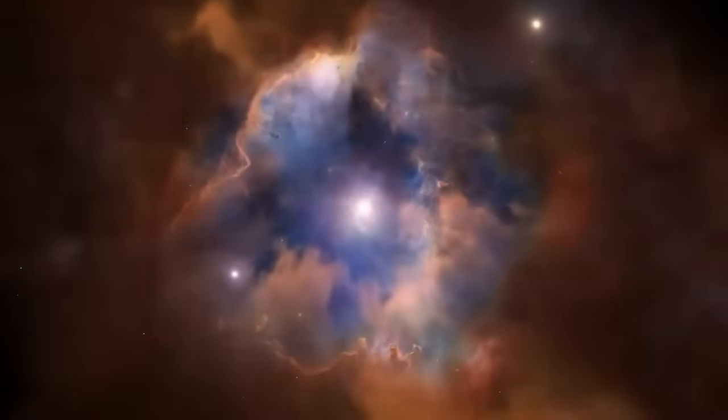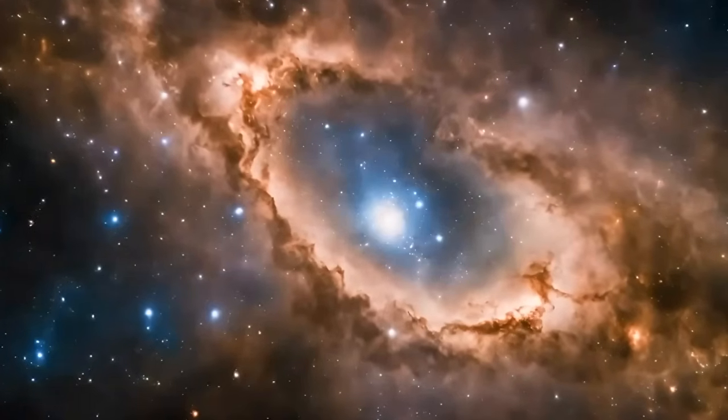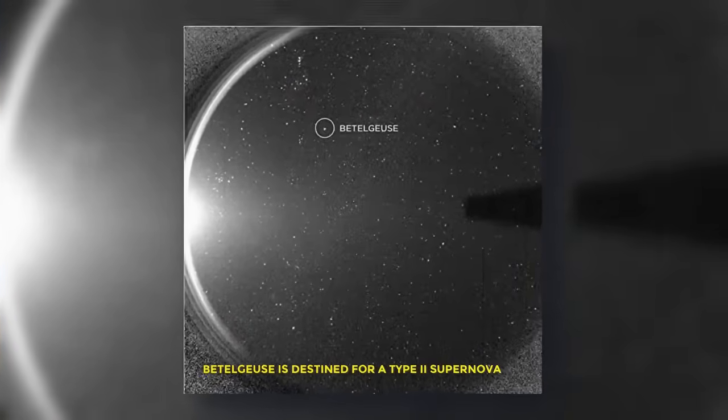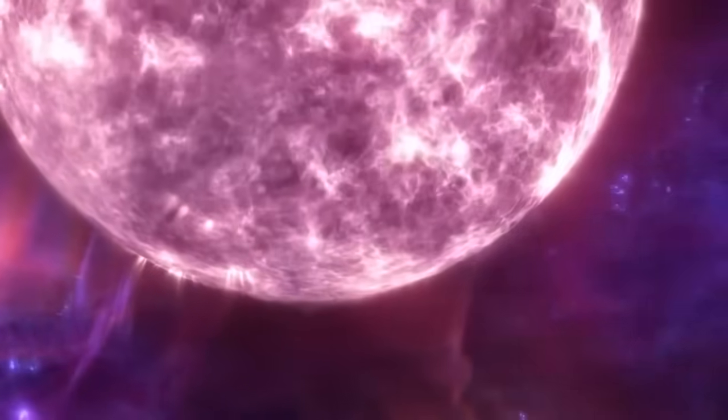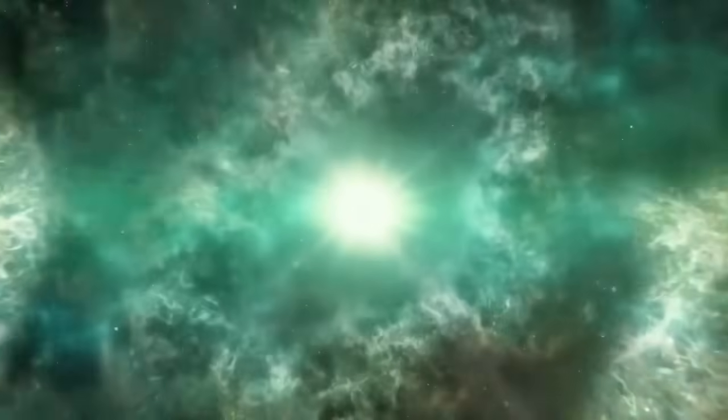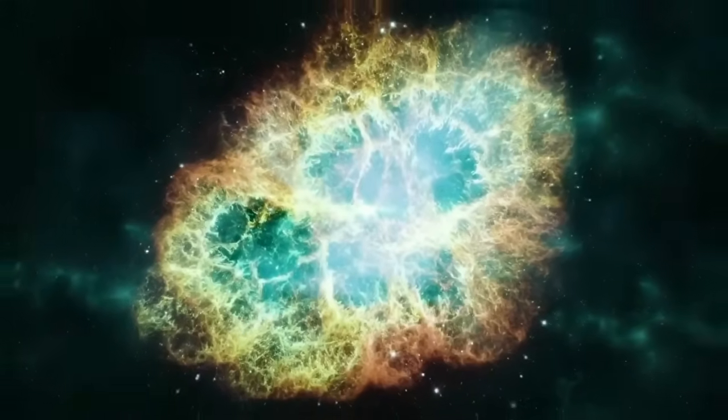Supernovae are among the most powerful and luminous events in the universe, releasing an enormous amount of energy in a short period. Betelgeuse is destined for a type 2 supernova, which occurs when a massive star exhausts its nuclear fuel and can no longer support its own mass. The core of the star collapses, triggering a shockwave that tears the star apart, expelling its outer layers into space at incredible speeds.